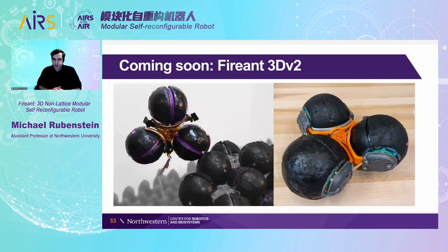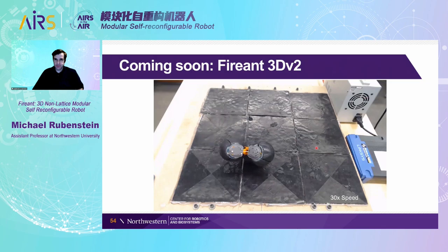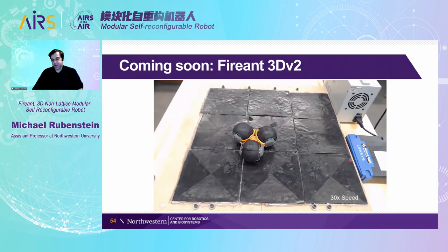We are in the process of finishing FireAnt 3D version 2, with some improvements: we significantly reduced the size and weight, and reduced the number of motors from six to three — a much lighter, simpler robot with more robust attachment mechanisms. Here's an example of FireAnt 3D version 2 in action, moving along a surface made of conductive plastic. This is still a work in progress, not a final video, but it shows where we're going. This robot is significantly smaller than the original, which makes it relatively stronger for attachment to the surface.